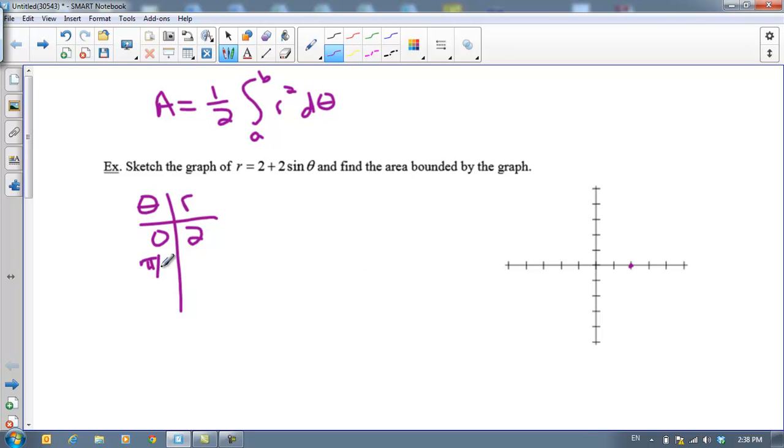Then if you plug in π/2, the sine of π/2 is 1 times 2 is 2 plus 2 is 4. So at 90 degree rotation, or at π/2, we're all the way up here at 4.